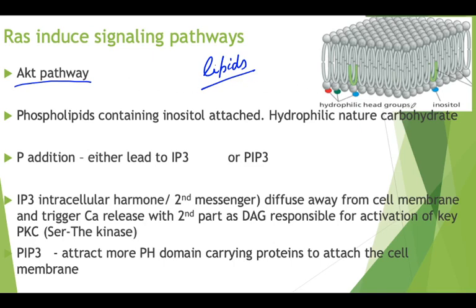The final products of inositol-mediated activation are two forms: inositol 3-phosphates — PIP3 if the structure remains membrane-bound, or IP3 if unbound and freely floating in the cytoplasm. IP3 compounds are called intracellular hormones or second messengers; they diffuse away from the cell membrane and trigger calcium release. The second part is diacylglycerol.